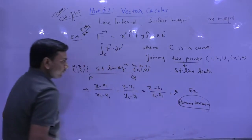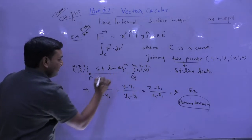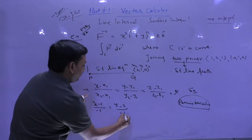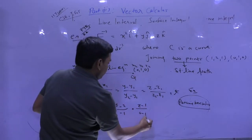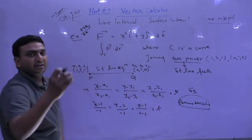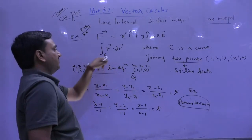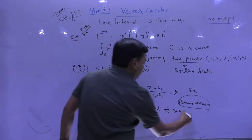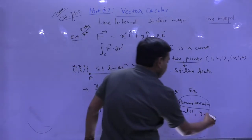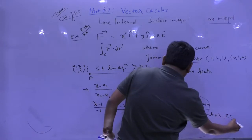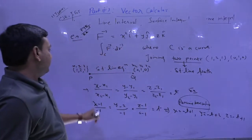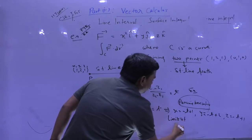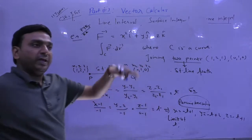So from parametrization we get: x = −t + 1, y = −t + 2, z = −t + 1. If I check for x going from 1 to 0, the next job is to find the limits for t. Substituting x = 0 gives t = 1, and x = 1 gives t = 0, so t goes from 0 to 1.